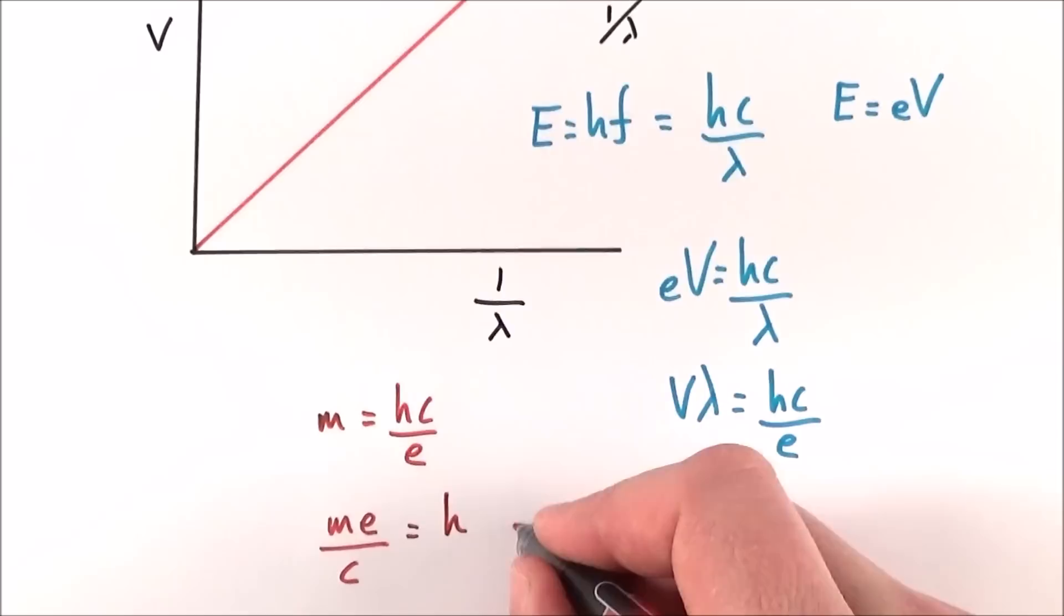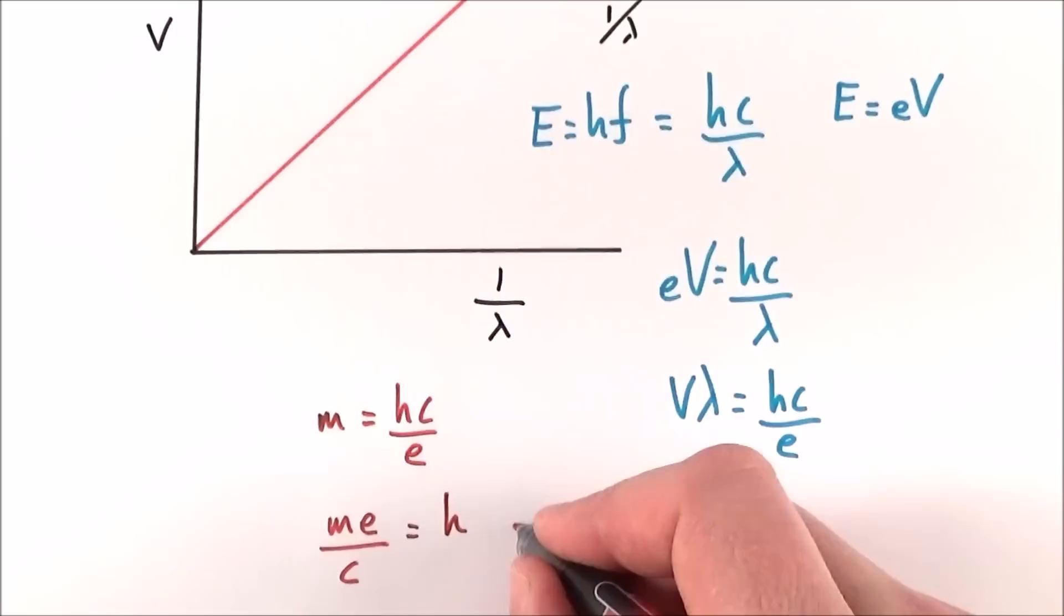And this should be, again, a value, I think I said it before, of 6.63 times 10 to the minus 34 joule seconds. And that's the way that you can work out Planck's constant yourself in the lab.